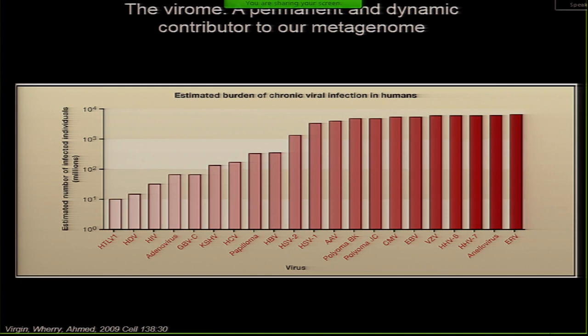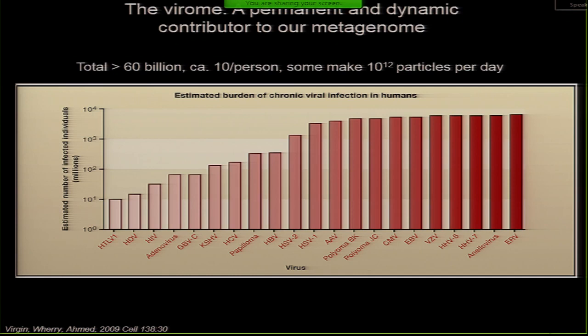We'll start with the virome. This is the original concept from 2009. This shows the number of people on earth and the number of those people who have all these different viruses. People in this room have an average of 10 chronic virus infections. There are eight human herpes viruses — all of you have four or five, some of you have all eight. If I were to swab your throats right now, you are shedding these viruses but you are apparently healthy. They are part of your genome in a certain sense, and they are in active interplay with your immune system.